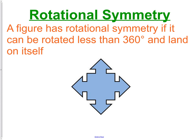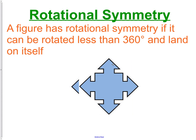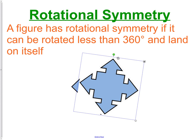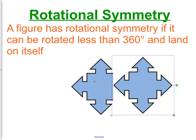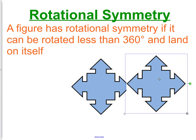Rotational symmetry. A figure has rotational symmetry if it can be rotated less than 360 degrees and land on itself and make a perfect match. As we look at this figure on the screen, as we rotate it, it can be rotated numerous times and land directly on top of itself. There's one rotation. You can see how that's going to land right on top of itself.